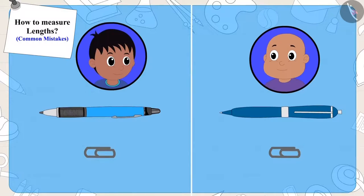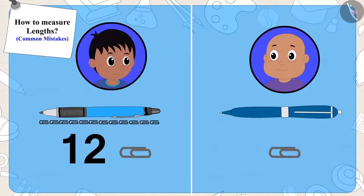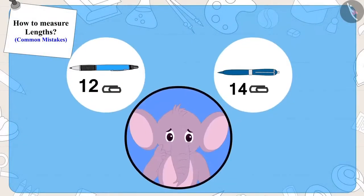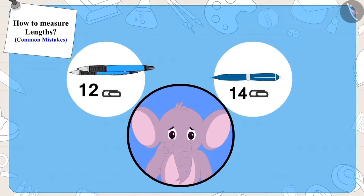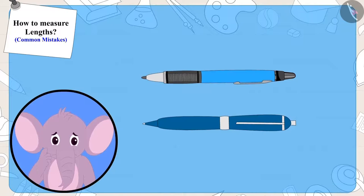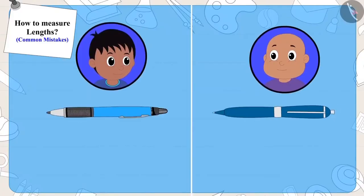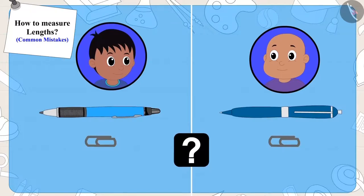Raju said his pen was twelve clips long, and Bablu said his pen was fourteen clips long. Appu again felt something was wrong here. He placed both their pens alongside each other and saw that both pens were of the same length. Can you say this time, out of the two, who made the mistake and what was the mistake?